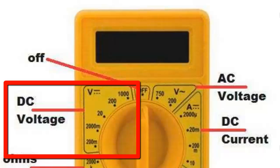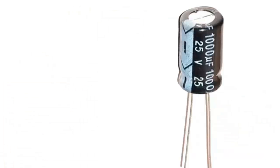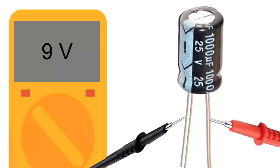Set the multimeter to DC voltage mode. Place the multimeter probes on the capacitor terminals. If the multimeter shows voltage, proceed with the discharge.